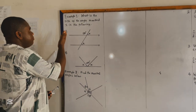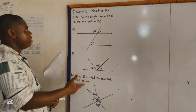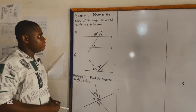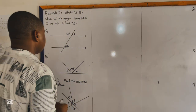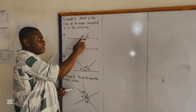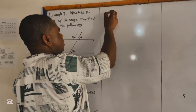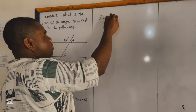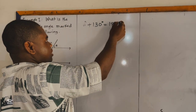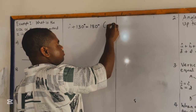For example one: what is the size of the angle marked X in the following diagrams A and B? We have to find the size of the angle marked X. In the first one, we cannot find X directly — we need to find angle A first.